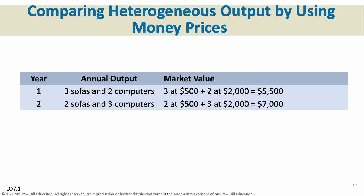The reason we use dollars is it's a way to compare different economies that make different things. For example, if one economy made three sofas and two computers, and another made two sofas and three computers, we have to determine what sofas and computers are worth. We use dollars to denominate GDP, but it's not something like income or a salary — the dollars are just a way to determine whether we can compare one economy to another.